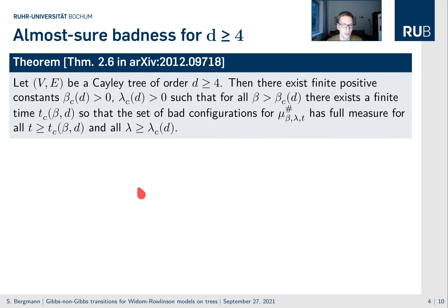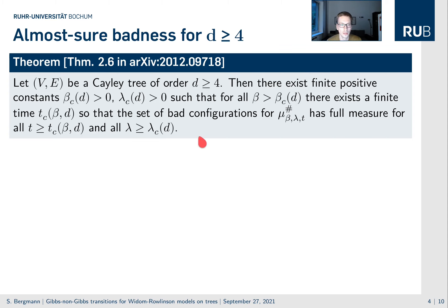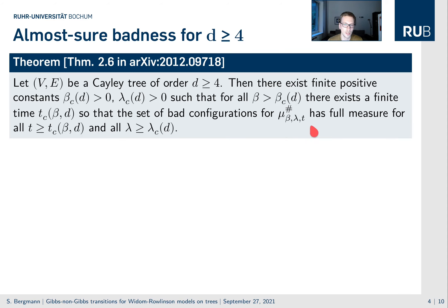Our main result is that for the Cayley tree of order d greater than or equal to 4, there exist d-dependent constants beta critical and lambda critical, which are larger than 0 but finite, such that for all parameters beta and lambda which are larger, the measure becomes non-Gibbs after some time t depending on beta and d. Not only this, but the set of bad configurations actually has full measure. So one single bad configuration would suffice, but we actually have a set of full measure of bad configurations.